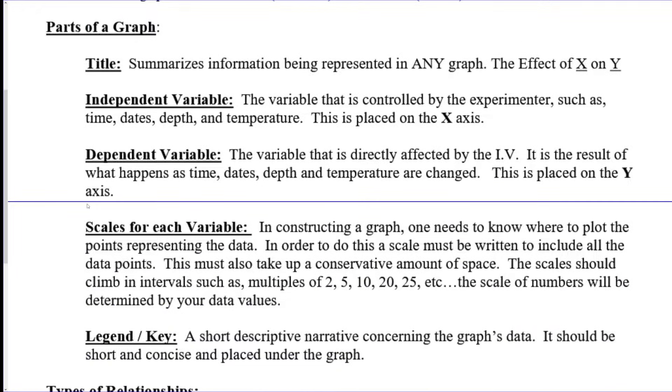We need to make sure we have certain aspects of the graph in order to be fully complete. The first one is a title. We'll get to how to write that in a second. We got our independent variable, which goes on the x-axis at the bottom of the graph, and the dependent variable is the y which goes on the side of the graph. The scale here is what the numbers are going up by on the bottom and the side, and our legend or key is useful for labeling certain lines.